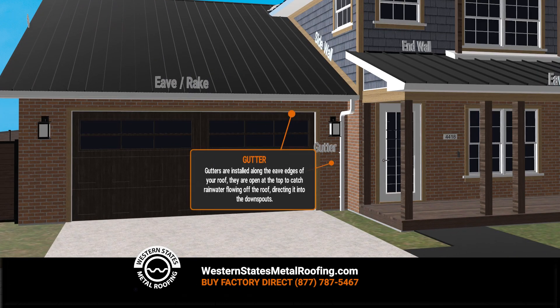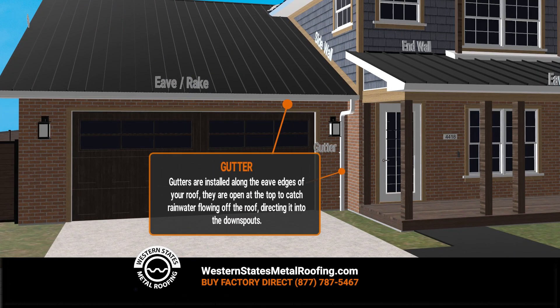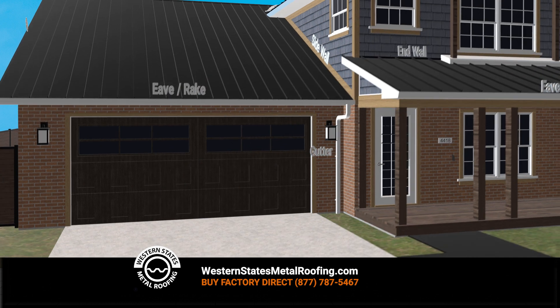Eaves are installed along the eave edges of your roof. They are open at the top to catch rainwater flowing off the roof, directing it into the downspouts.